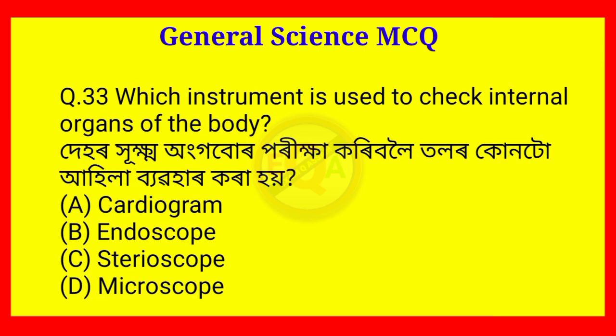Question number 33. Which instrument is used to check internal organs of the body? The answer is Option B — Endoscope.